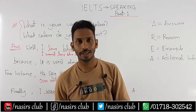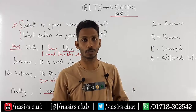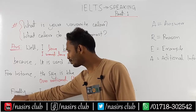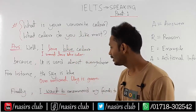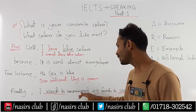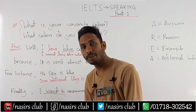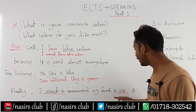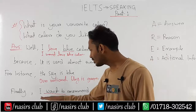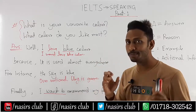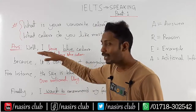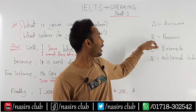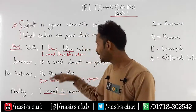This is the A at the end — Additional information. Finally, I recommend my friends to use it. This is the complete AREA method: Answer, Reason, Example, Additional information — four functions. By using all four, you can achieve Band 9, 8, or 7.